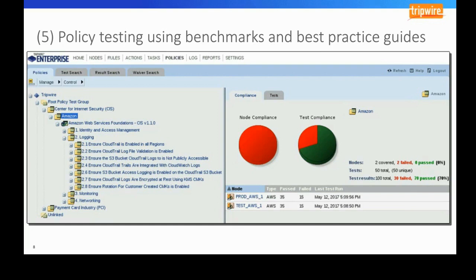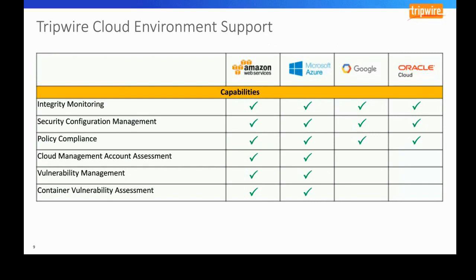Our final slide shows the various Tripwire solutions and the coverage map across the various cloud providers. With our integrity monitoring, we can do that within Amazon, Microsoft Azure, Google, and Oracle. Similarly, with secure configuration management, we can do that across all four public cloud platforms, along with policy and compliance.